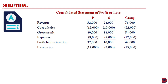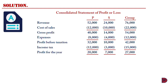Then income tax is $12,000 for P and $3,000 for S, leading to $15,000 for the group. This gives a profit for the year of $20,000 for P, $7,000 for S, and $27,000 for the group. We now have to attribute the profit of the subsidiary to that of the parent and the non-controlling interest.